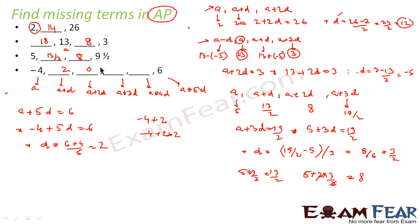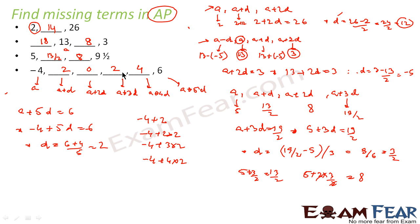With D equals 2, the second term A plus D is minus 4 plus 2 equals minus 2. The third term A plus 2D is minus 4 plus 4 equals 0. The fourth term A plus 3D is minus 4 plus 6 equals 2. The fifth term A plus 4D is minus 4 plus 8 equals 4. So the sequence is minus 4, minus 2, 0, 2, 4, 6.